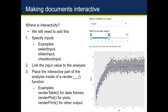So now that we've done all this, let's take a look at this as a whole and walk through it one more time. The first thing was to specify our inputs, the second was to link our input values to the analysis, and the third was to place the interactive part of the analysis inside of a render function — here it was render_plot, but the other options are render_table and render_print. Let's also try to add that checkbox and see if we can get that smooth line to show up.